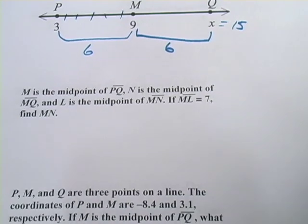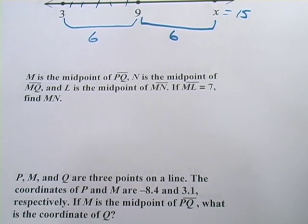Let's look at this next one. This one's a little trickier. It says M is the midpoint of PQ, N is the midpoint of MQ, L is the midpoint of MN. If ML equals 7, find MN. That's a lot of information. So I would recommend that we take it one step at a time and draw a picture.